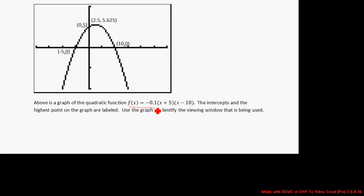The equation of the function is given to be f(x) = -0.1(x + 5)(x - 10). We see on the graph that the x-intercept (10, 0) has been labeled, the x-intercept (-5, 0) is labeled, the y-intercept (0, 5) has been labeled, and the peak point (2.5, 5.625) has been labeled.